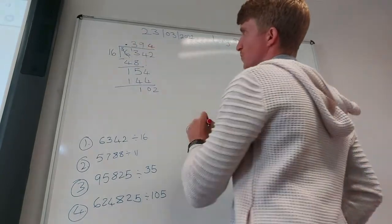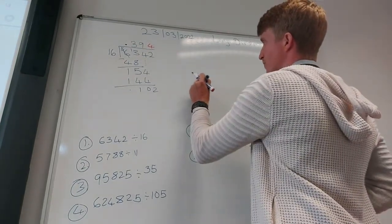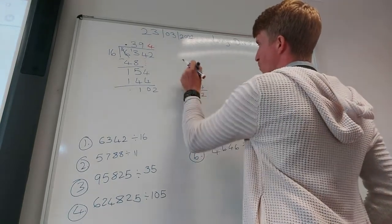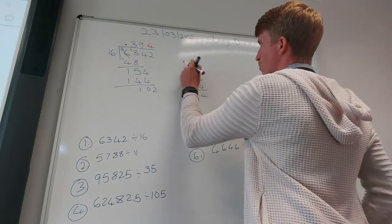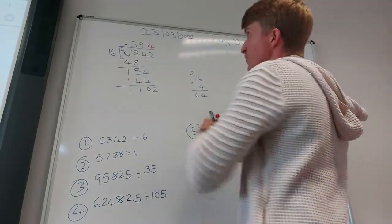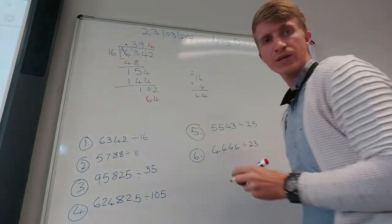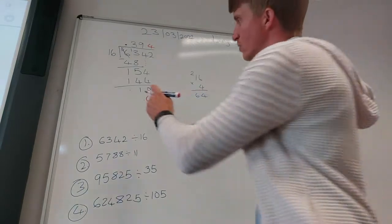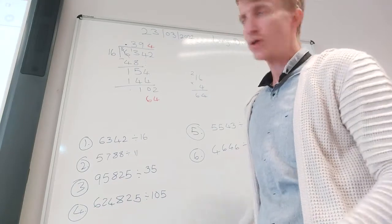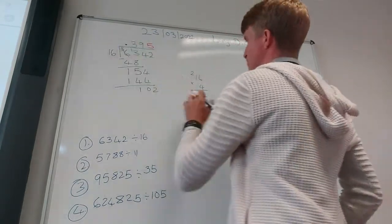I say 16 goes into 102. Let's say 4 times. 4 times 16. Again I can do it here on the side. 4 times 6 is 24, that's 4 plus that 2, equals 64. So now I can write 64 here. But I can see, hang on, 16 can go in there more times before it reaches that 102. So let's try instead of 4, we say 5.